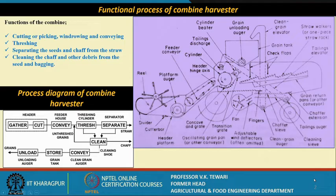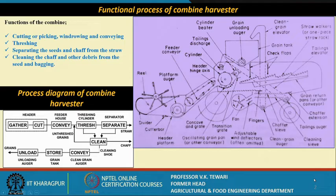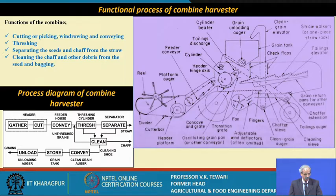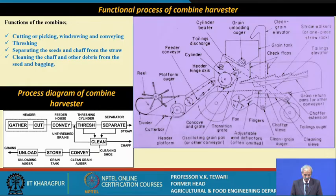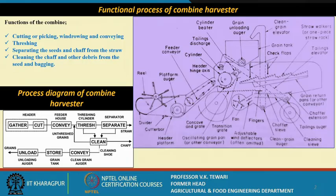Let us look at the details of the combine. The various functions include cutting, picking, windrowing, conveying, and threshing, as well as separating seeds and chaff from the actual grains. In the process diagram, there is a reel whose job is to bring the crop closer, and a cutter bar below it. The rods of the reel move to bring the crop to the cutter bar, which cuts it, and then the crop is conveyed.